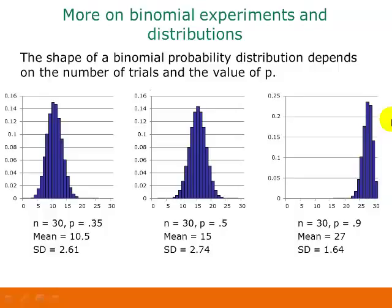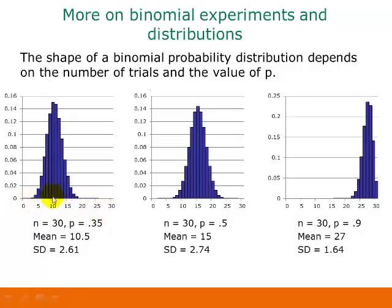Let's look a little bit more at binomial distributions and the mean and standard deviation. If we look at probability histograms for binomial distributions, we can see that the shape of the distribution depends on the number of trials n and the value of p. In this picture, we have a binomial distribution with 30 trials and probability of success p equals 0.35. The distribution is skewed to the right a little bit, with a longer tail on the right side and more of the data on the left. Our mean for this distribution is 10.5, which is a little bit to the left of center, and our standard deviation is 2.61.